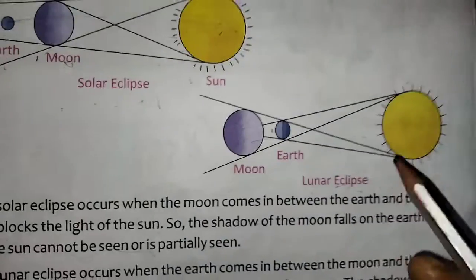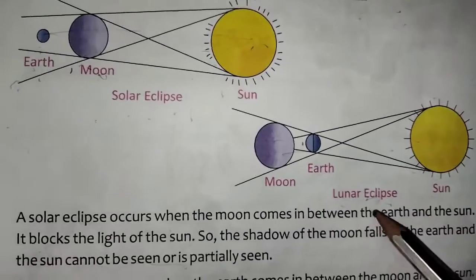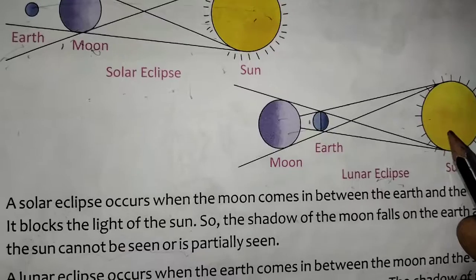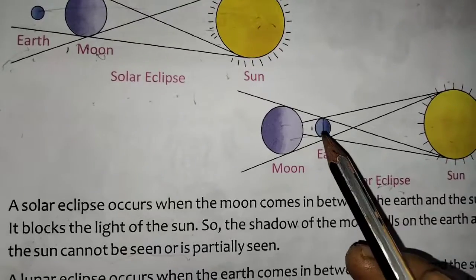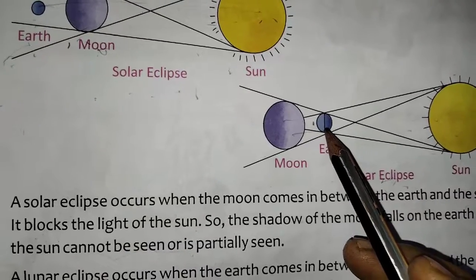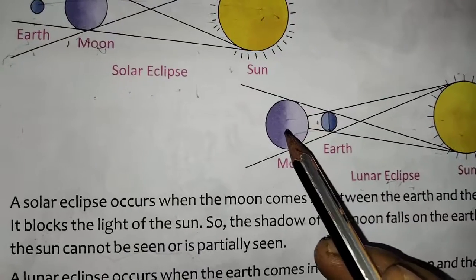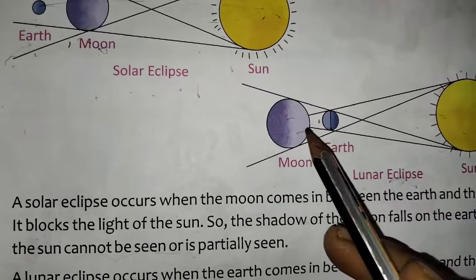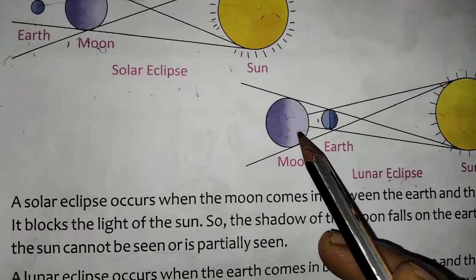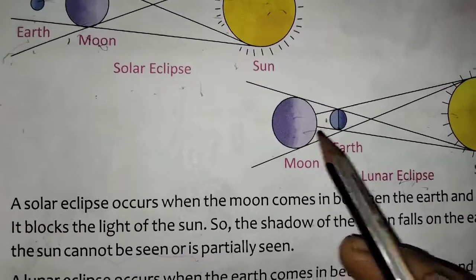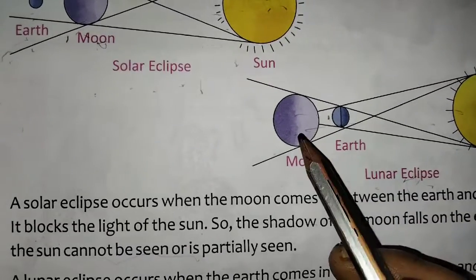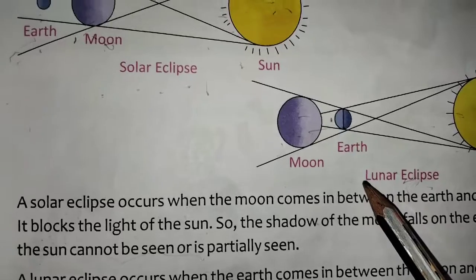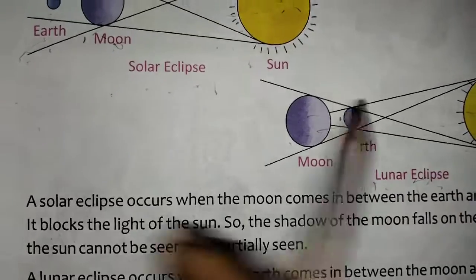And when it comes to a lunar eclipse, the sun's light goes on the earth and it will not pass on to the moon, because they are all in one straight line. That is known as a lunar eclipse.